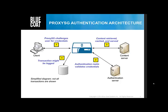Authentication realms are created on the Proxy SG and are used to validate submitted user credentials with an authentication server. Selecting and configuring realms are explained in more detail in the BlueCoat Proxy SG Authentication Realms training module. The requested content is retrieved, cached, and served only if the authentication is successful. Depending on access logging settings, details of the authentication may be logged on the Proxy SG. This module focuses on authenticating users to access remote or local content. The Proxy SG also can be used to authenticate administrative users to control access to the management console.